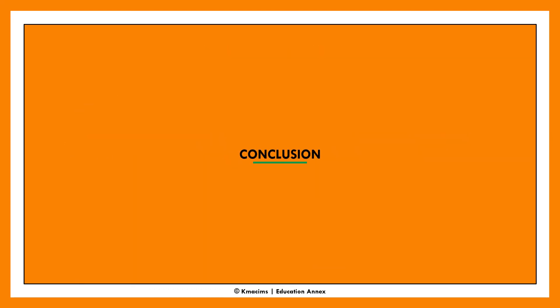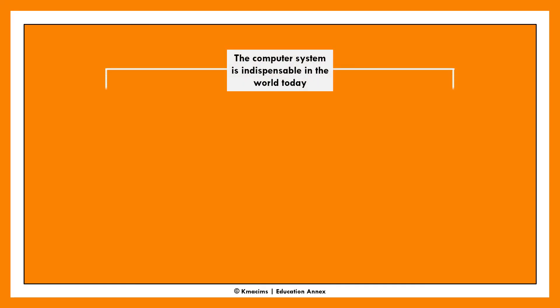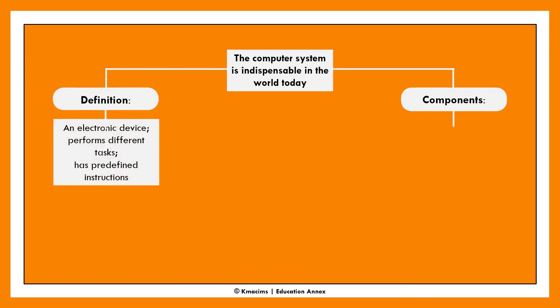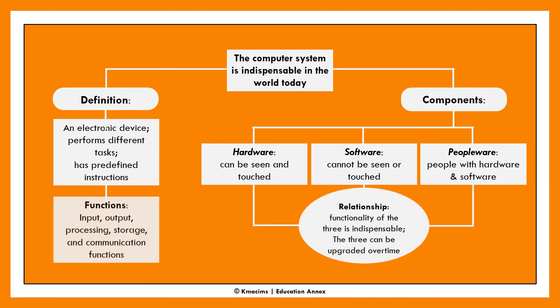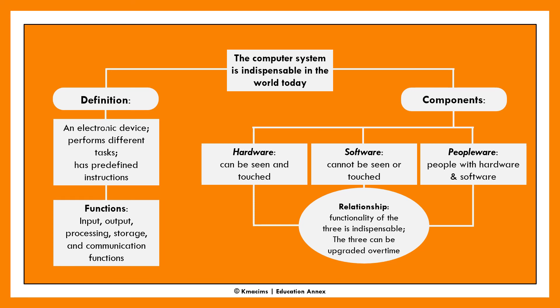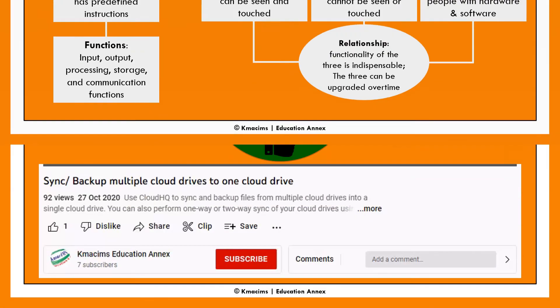In summary, a computer system is an electronic device that performs predefined tasks. There are five basic functions: input, output, storage, processing, and communication. We identified three basic components of a computer system: the hardware, the software, and the peopleware. We also identified the key relationships between the hardware, software, and peopleware components of the computer system.